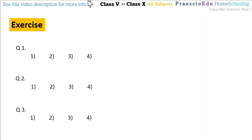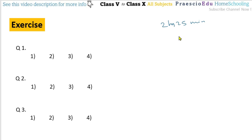Question number 1: A bus started from Swargate and after travelling for 2 hours and 25 minutes — that is the travelling time — it reached Satara at 15 minutes past 3 o'clock, meaning 3:15 pm.